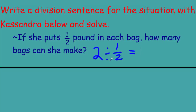Looking at the pattern: two divided by two equaled one, two divided by one equaled two — so two divided by one half is going to be more than two, because cutting each pound into halves makes more groups. I can visualize that each whole pound has two halves, so there should be four half-pounds in the two pounds total.